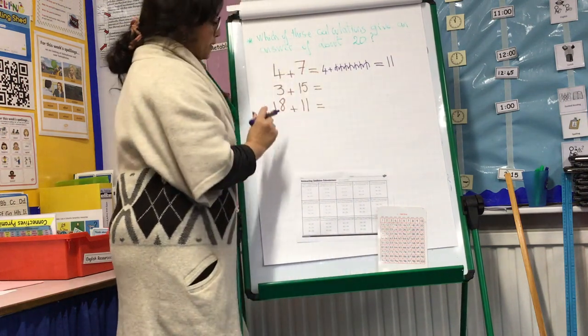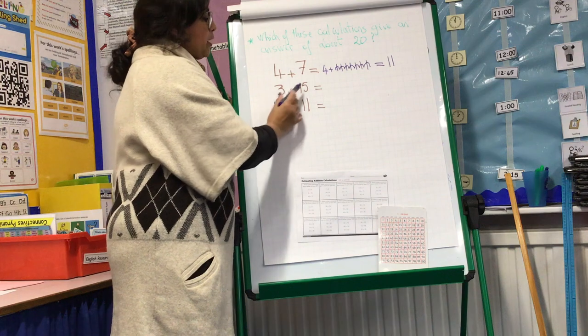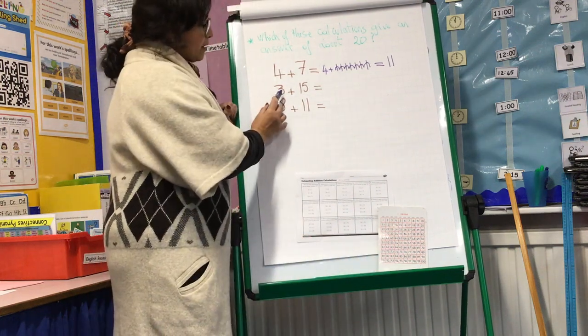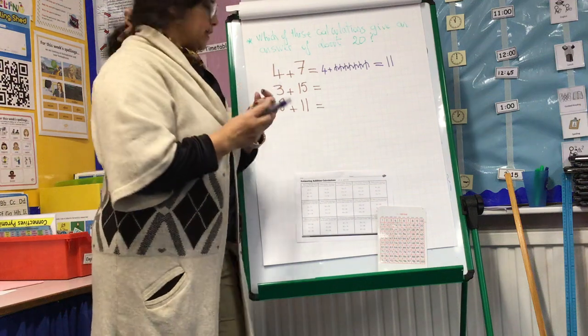Is 11 near to 20? Is it about 20? No, so we need that one. We know this one. What is 3 plus 15? This time I'm not going to use the ruler.